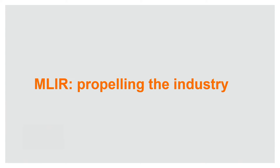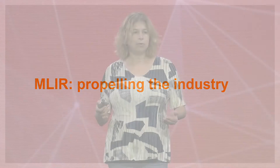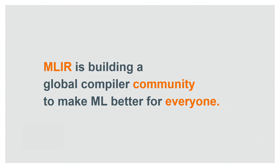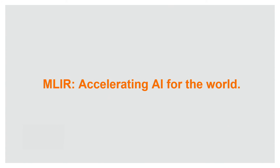To summarize, the reason we are building MLIR is because we want to move faster, and we want the industry to move faster with us. One of the keys to making the industry work well together is neutral governance, and that's why we submitted MLIR as a project to LLVM — it is now part of the LLVM ecosystem. This is very important because LLVM has a 20-year history of neutral governance and building infrastructure used by everybody in the world. This is just the beginning — we are building a global community around MLIR, and once we are done, ML will be better for everybody, and we will see much faster advance of artificial intelligence in the world.